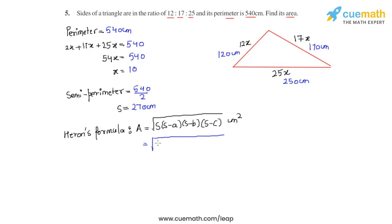So we get under root 270 times 270 minus 120 times 270 minus 170 times 270 minus 250 centimeters square. On further calculation we get that as under root 270 times 150 times 100 times 20. So on further calculation that will give us the area of this triangle to be equal to 9000 centimeter square.